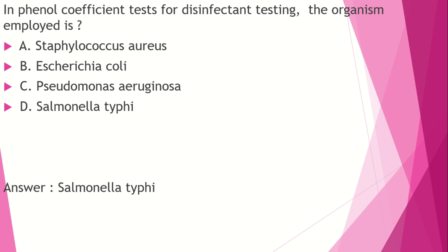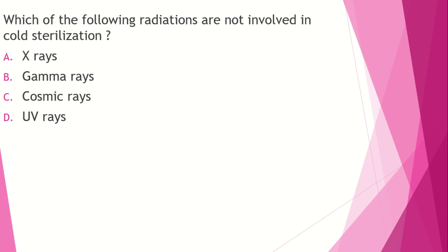The following radiations are not involved in cold sterilization — very important. Options: X-rays, gamma rays, cosmic rays, UV rays. Cold sterilization uses ionizing radiation for heat-sensitive substances. X-rays, gamma rays, and cosmic rays are ionizing radiation. UV rays are non-ionizing radiation. Therefore, UV rays are not involved in cold sterilization. The answer is UV rays.